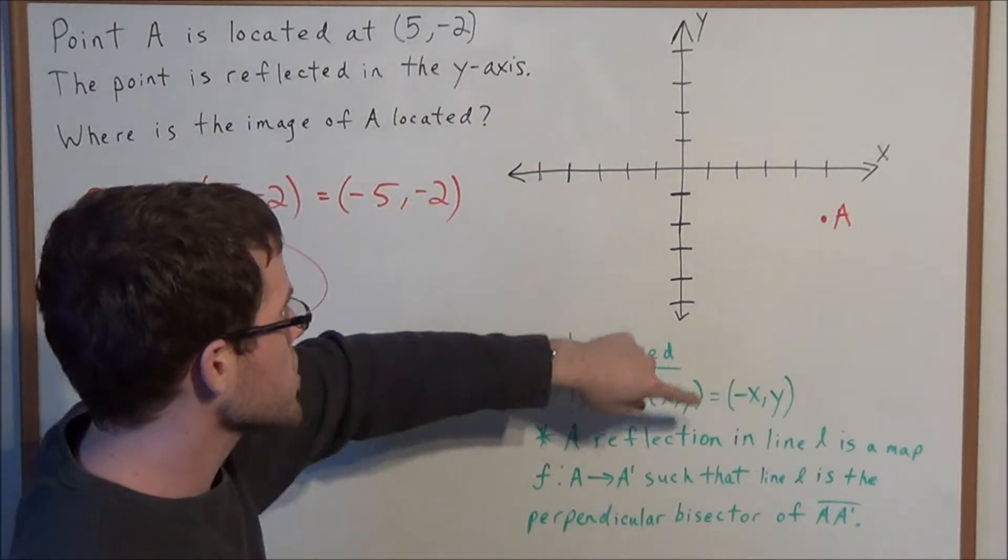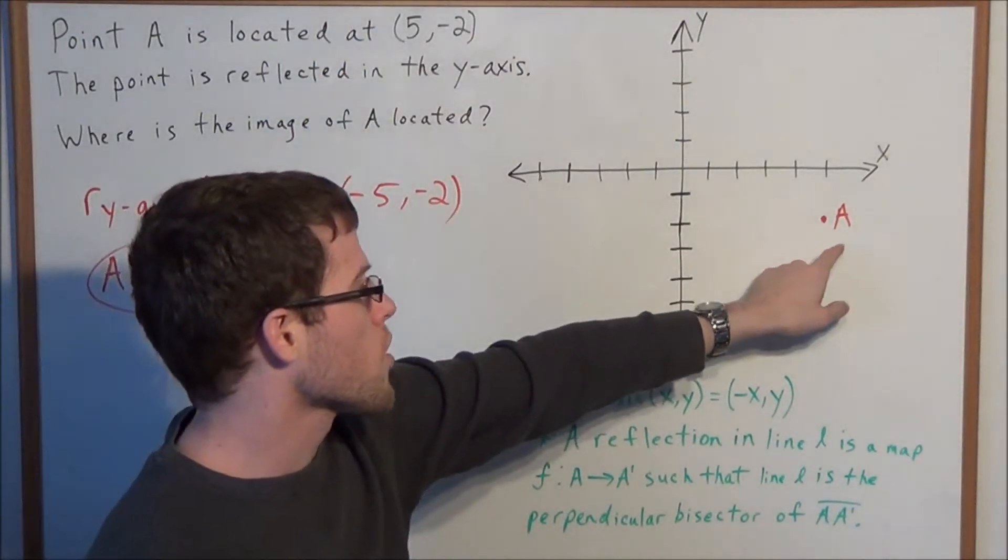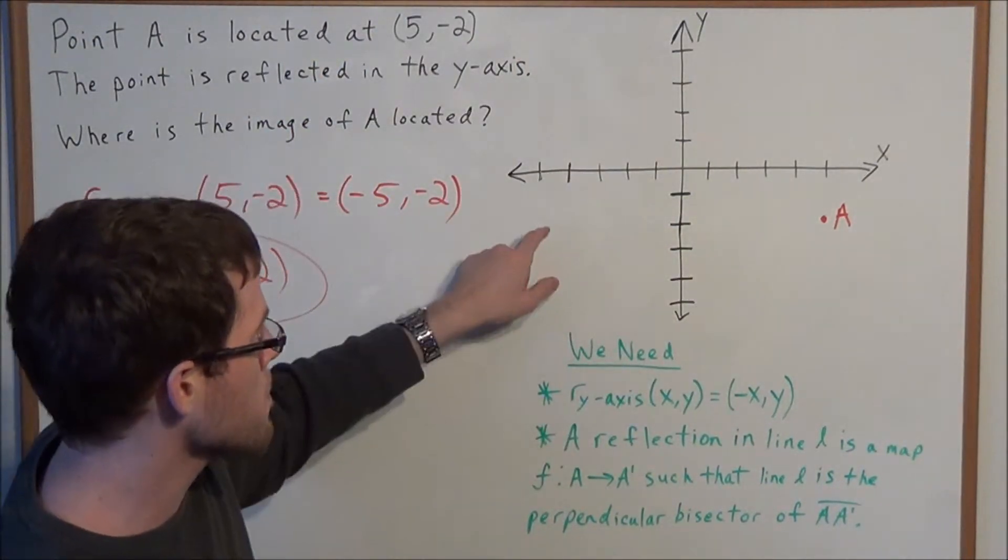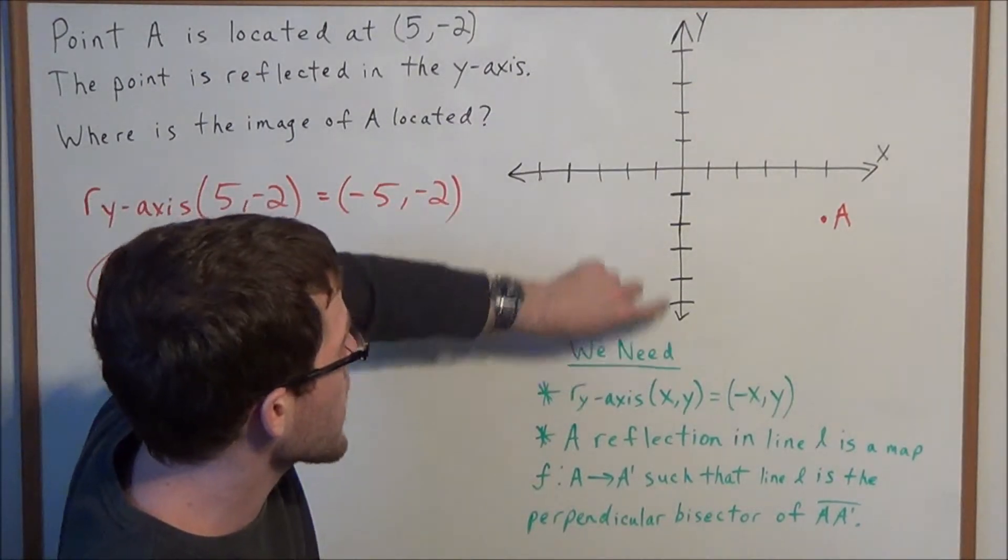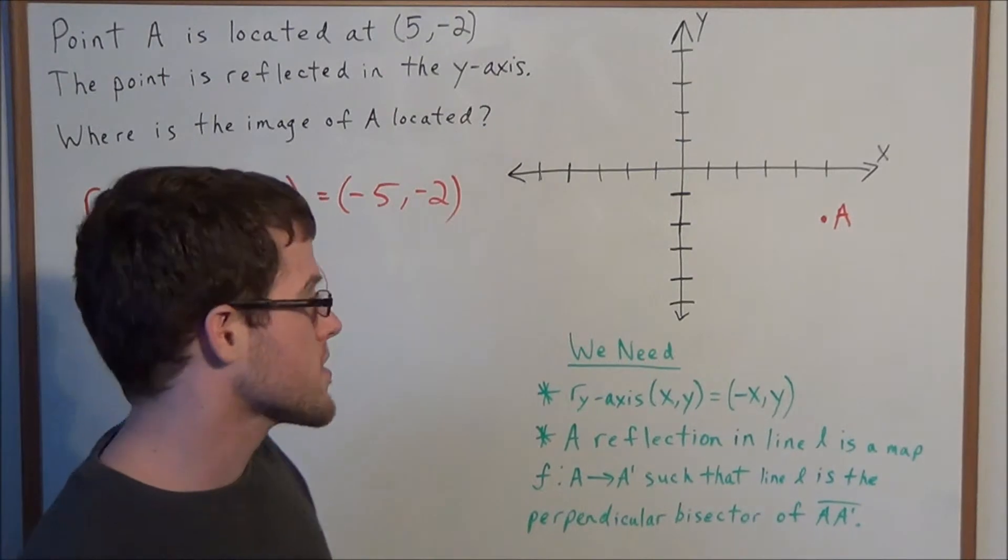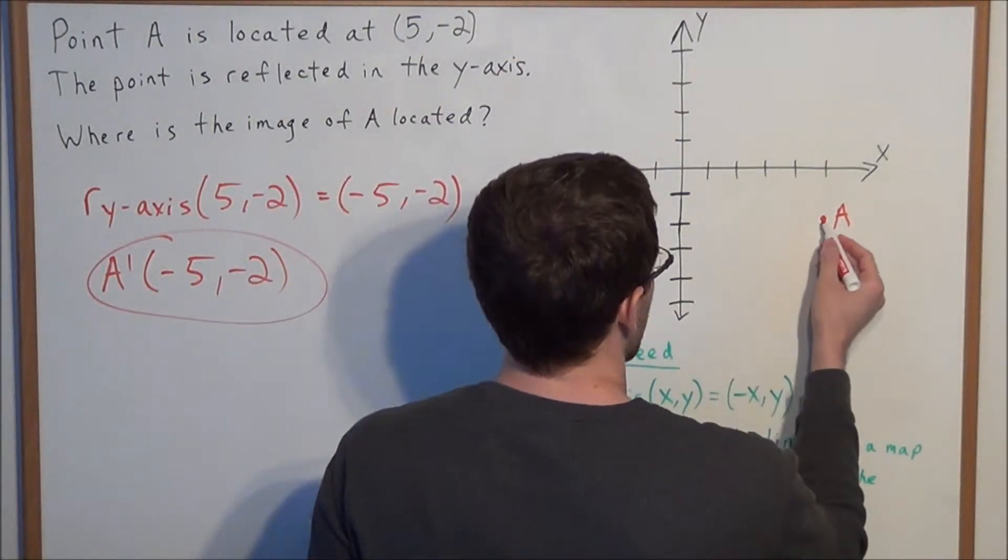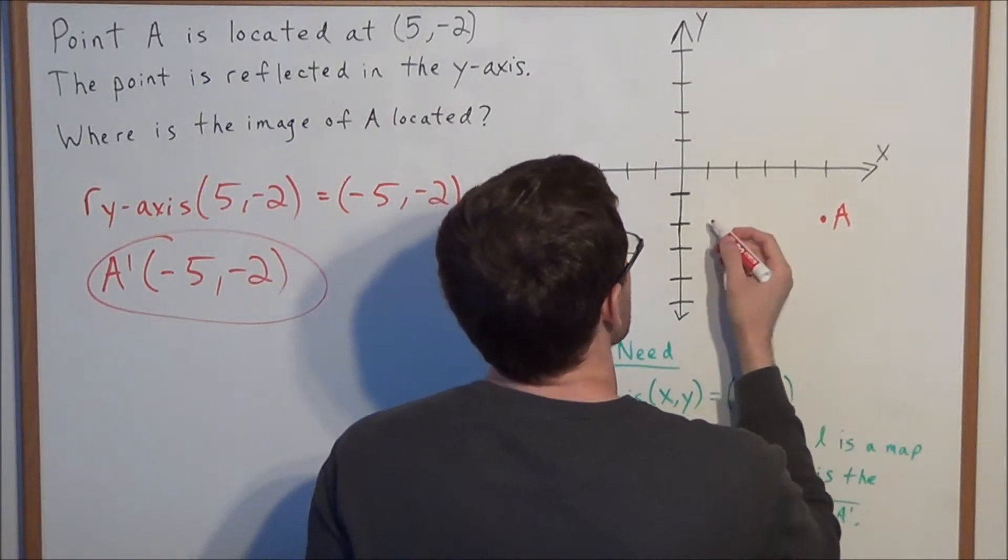Well, we know that the reflection line is the y-axis. And we also know one of our points A. So to find A prime, we know that the y-axis has to be the perpendicular bisector of line segment AA prime. So what we could do is draw a perpendicular line from the point A to the y-axis.